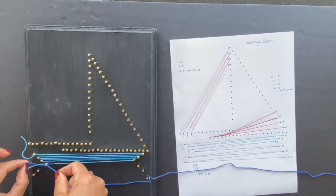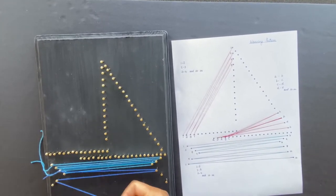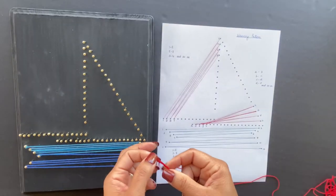For water, use dark blue string. Follow the sequence of 7 to 8, 8 to 9, and so on.